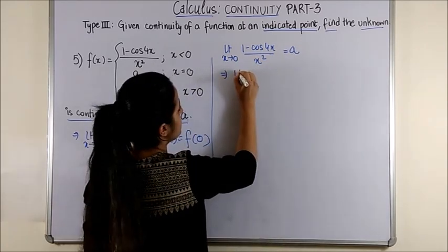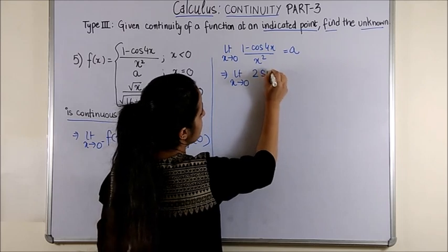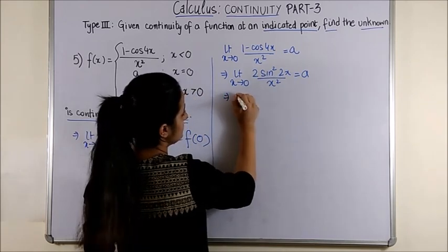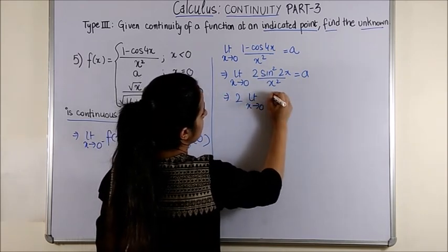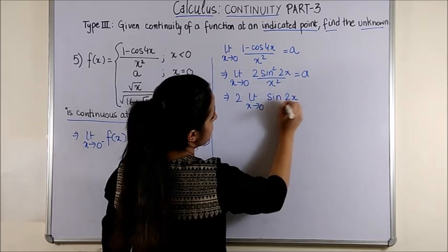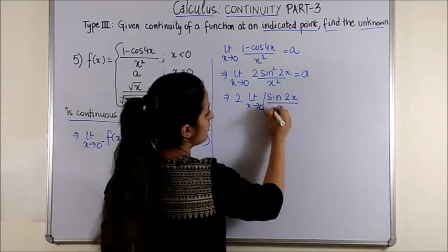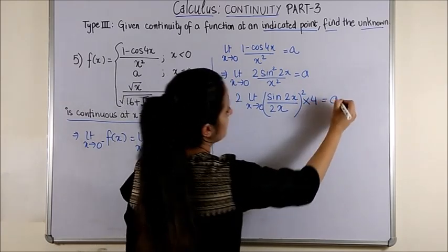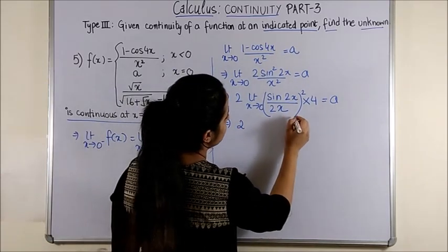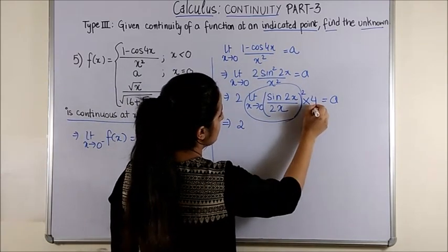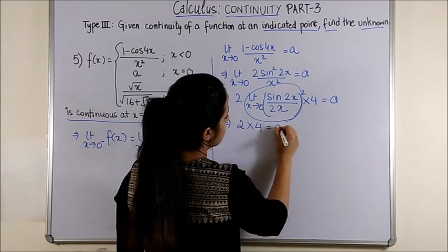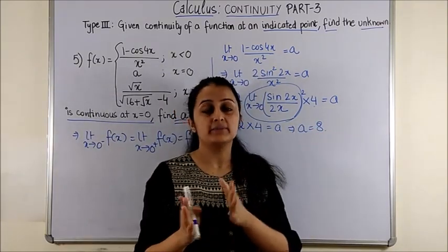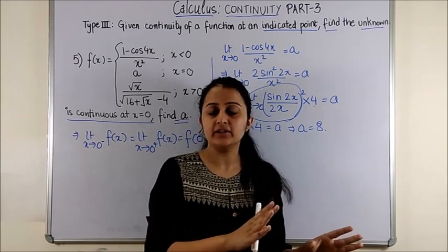Now you are just using your trigonometry here. This becomes 2 sin square 2x upon x square is a. So this is like saying sin 2x upon x whole square. So you know you have to multiply and divide with 4. This is what we have, twice of this gives us 1. This is 4. So 2 into 4 is a. That means a is 8.